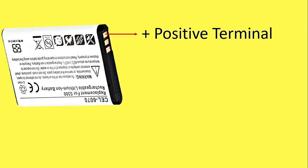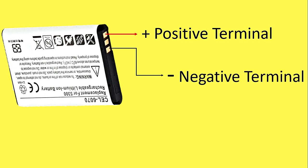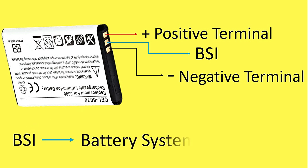In all batteries there are only two terminals — positive and negative. If a battery has three or four terminals, there must be an additional function. Here I have a phone battery with three terminals. The positive and negative terminals are standard, but the middle terminal is the BSI terminal. BSI stands for Battery System Indicator — this terminal gives information about how much the battery is charged.